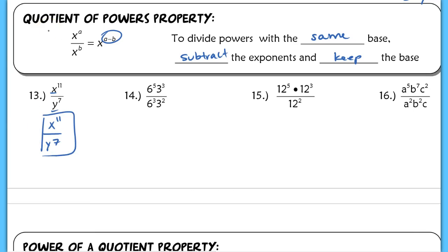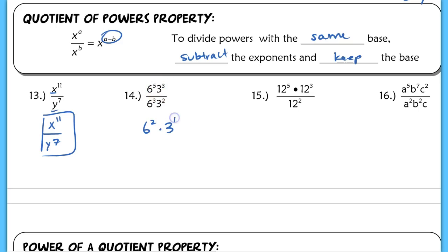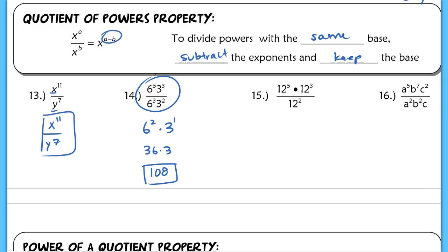In number 14, I can write this as 6 to the 5th over 6 to the 3rd and simplify that as 6 squared — I simply subtract the exponents. Then I have 3 cubed over 3 squared; subtract your exponents and you get 3 to the first. So this is 36 times 3, which is 108. You can evaluate something that looks really tough to do without a calculator easily if you use your exponent properties.